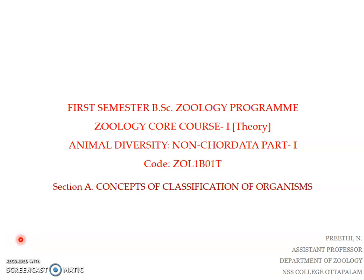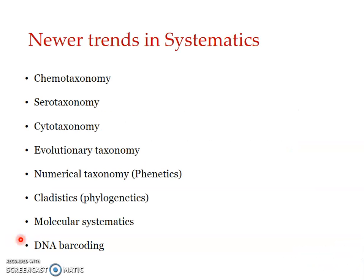Welcome to another session on concepts of classification of organisms. In this presentation we will be looking in detail at the newer trends in systematics. The modern trends in systematics include chemotaxonomy, serotaxonomy, cytotaxonomy, evolutionary taxonomy or phyletics, numerical taxonomy or phonetics, cladistics or phylogenetics, molecular systematics and DNA barcoding. Among these we have already discussed phyletics, phonetics and cladistics. The remaining five we will be dealing with in detail here.